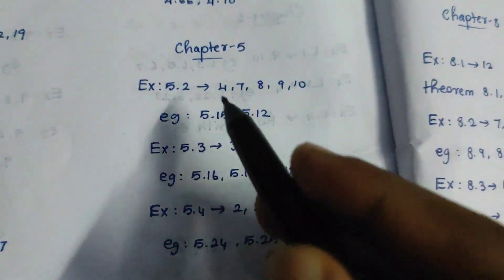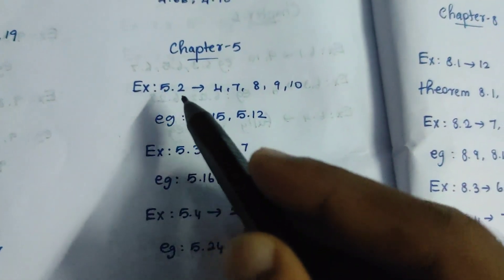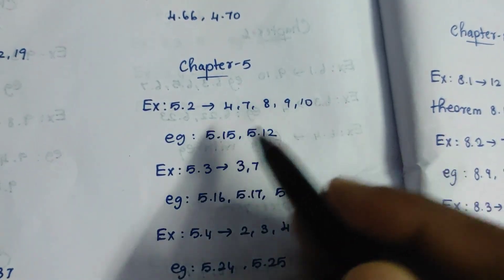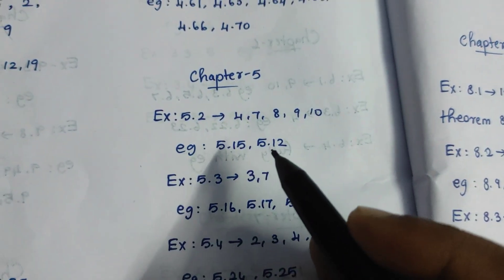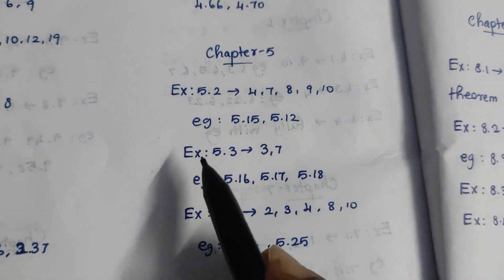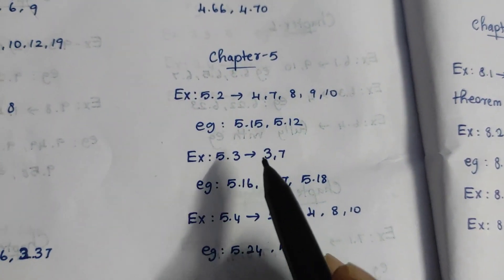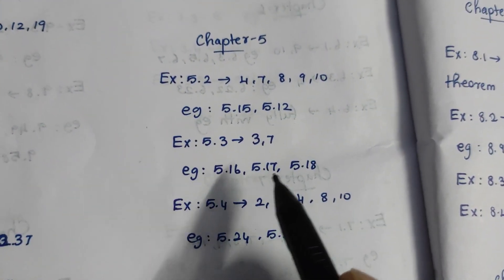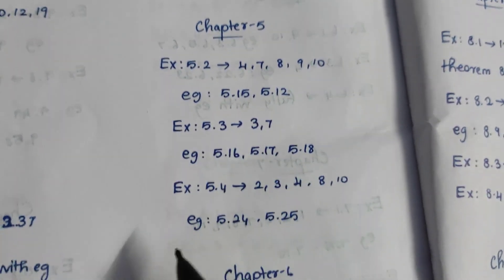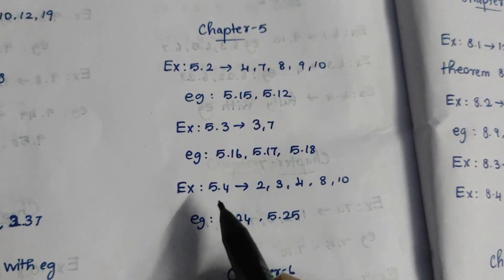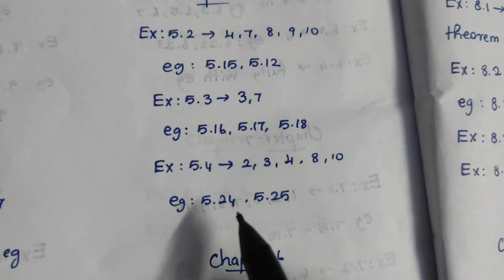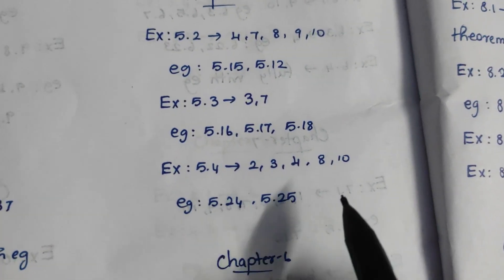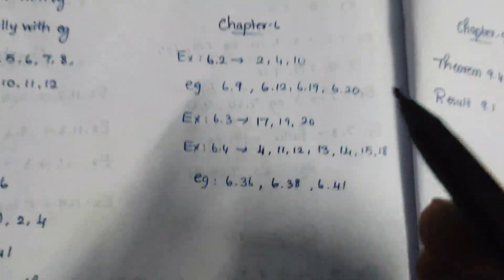Chapter 5, Exercise 5.2: 4, 7, 8, 9, 10. Example 5.15 and 5.12. Exercise 5.3: 3, 7. Example 5.16, 17, 18. Exercise 5.4: 2, 3, 4, 8, 10. Example 5.24, 5.25. This is the fifth chapter.